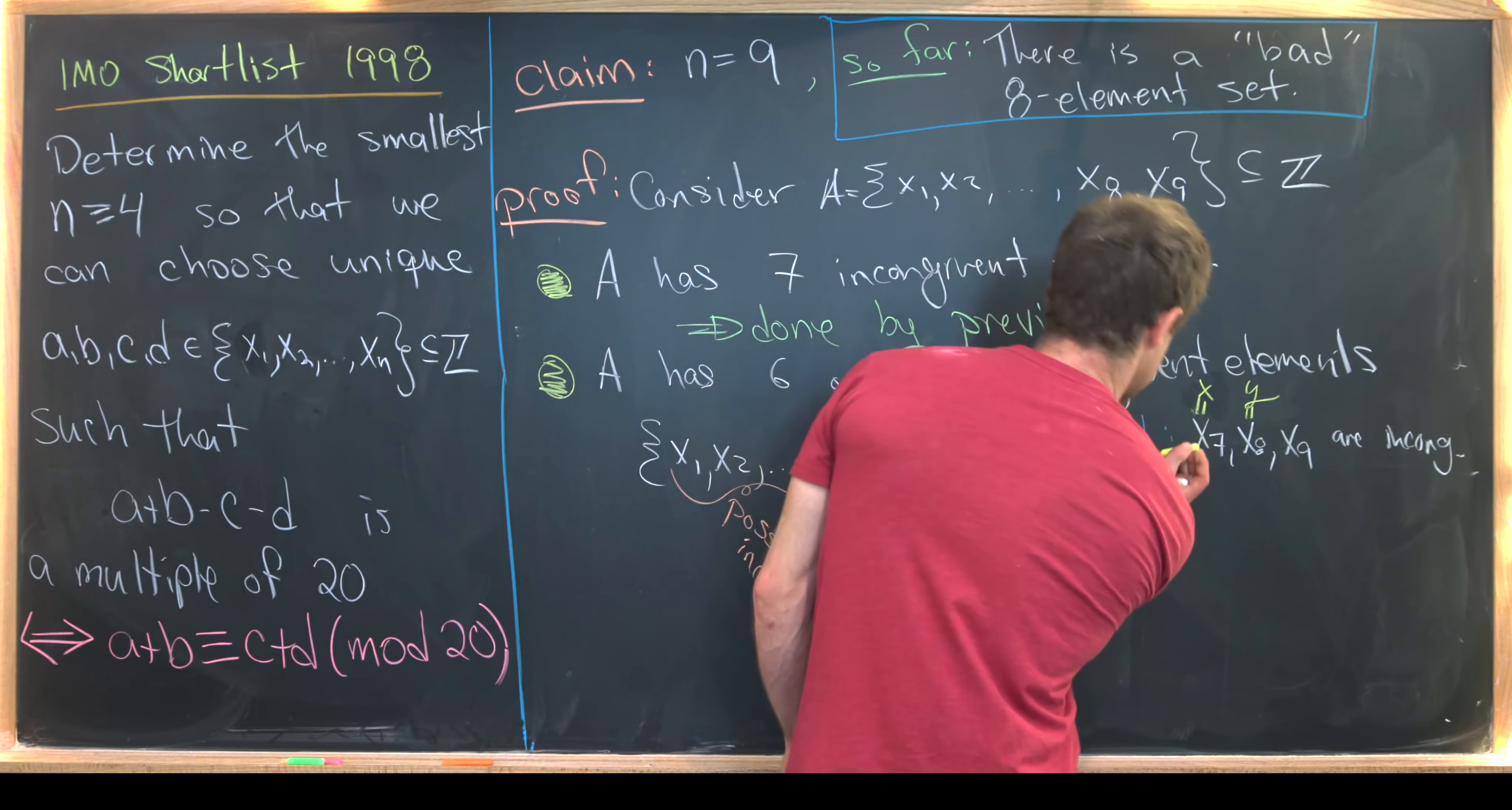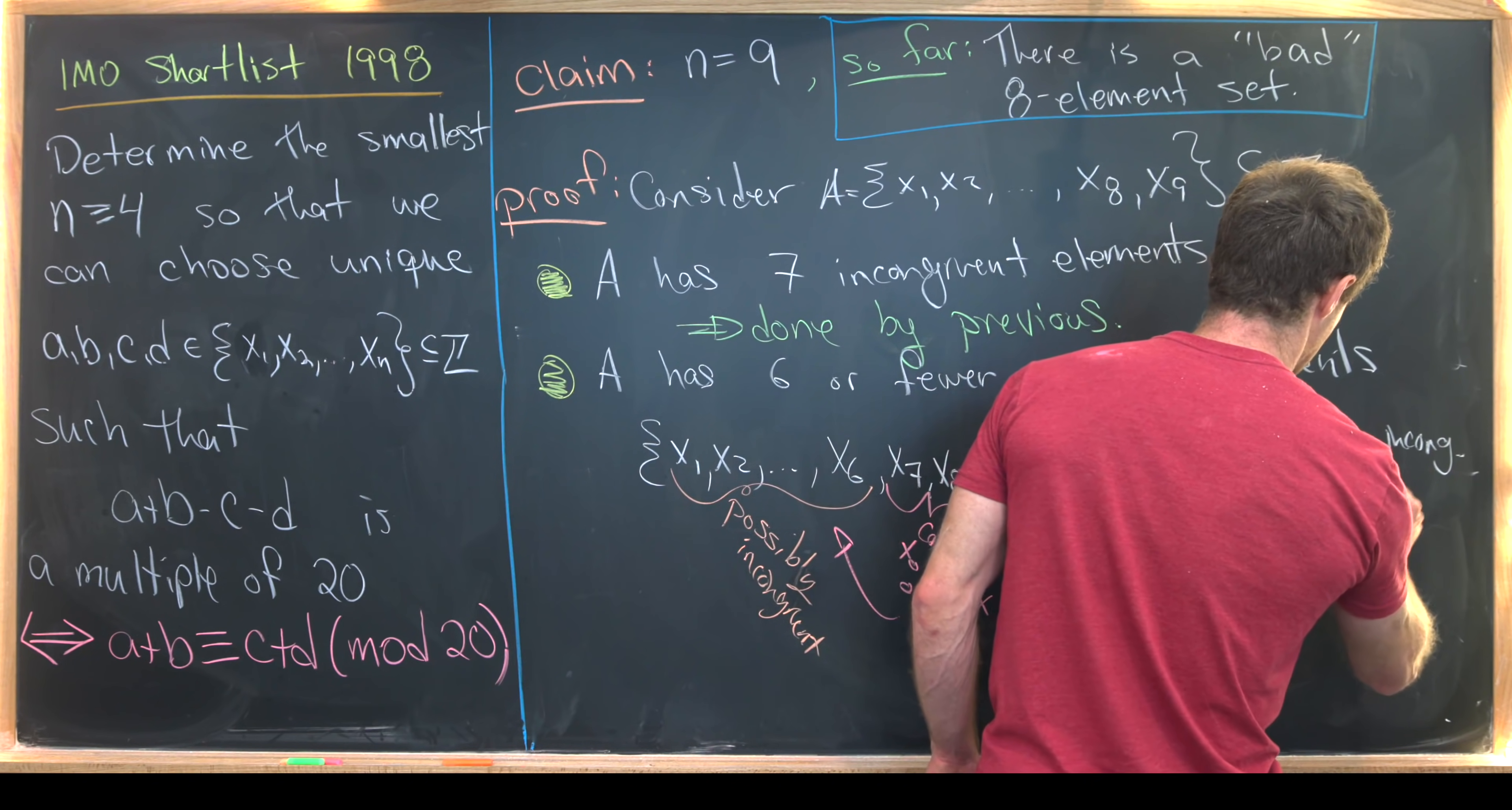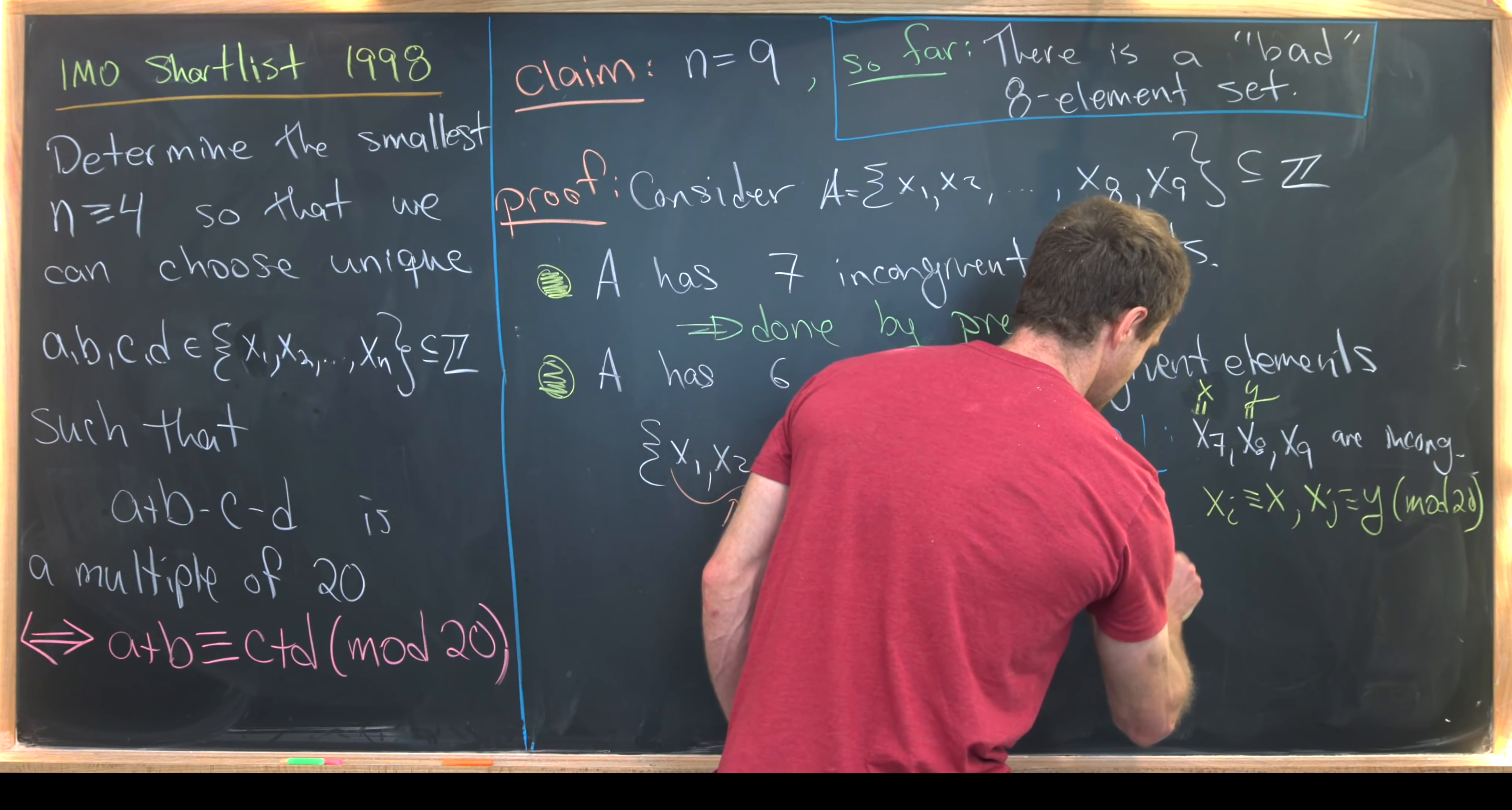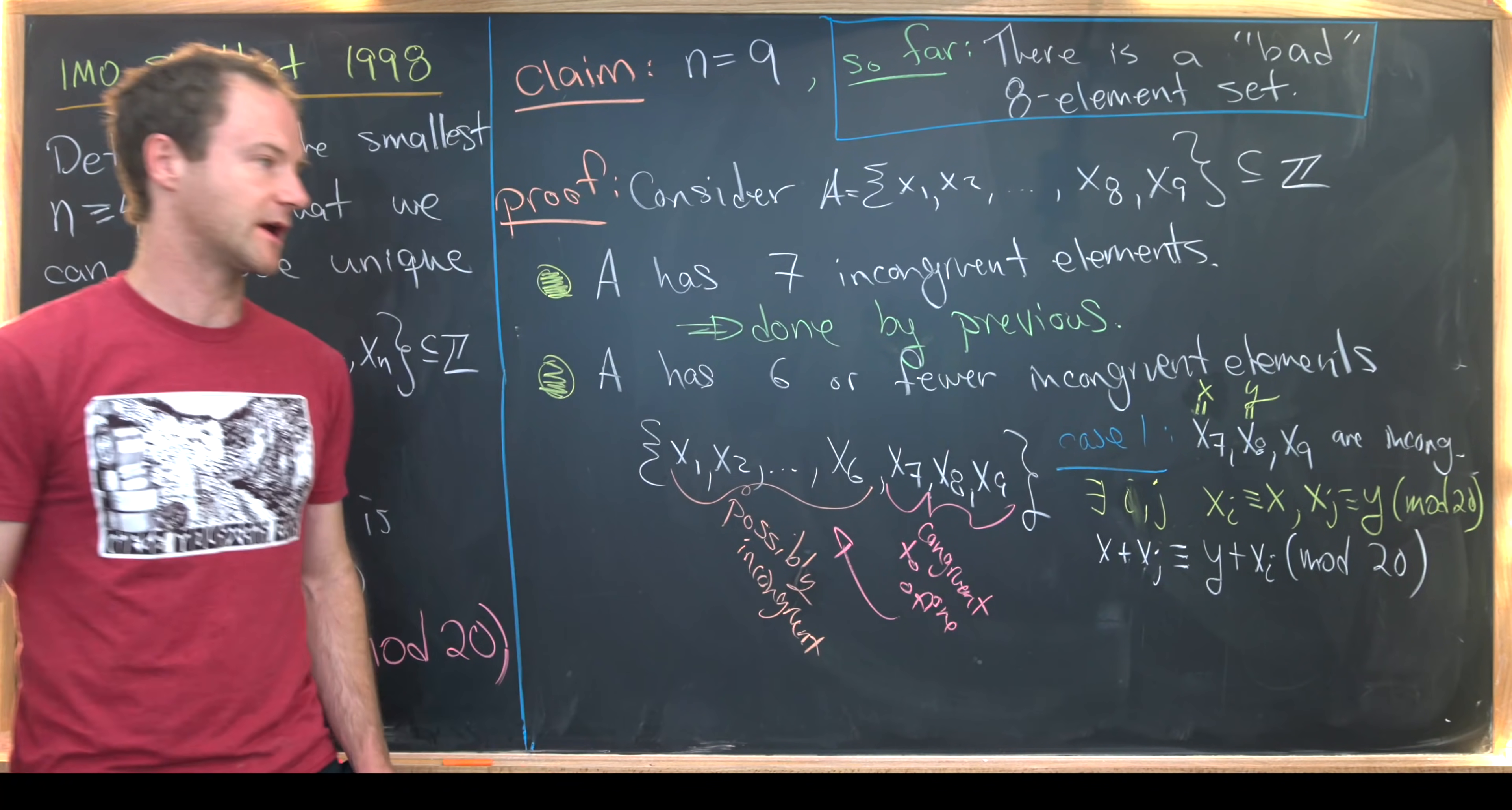where xi is congruent to x, and xj is congruent to y. And this is all happening mod 20. But if we have that set up, we clearly have x plus xj is congruent to y plus xi modulo 20. Okay, great.